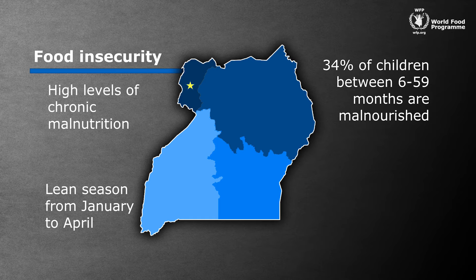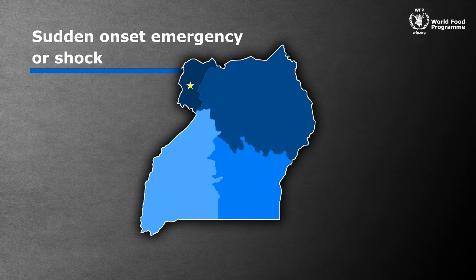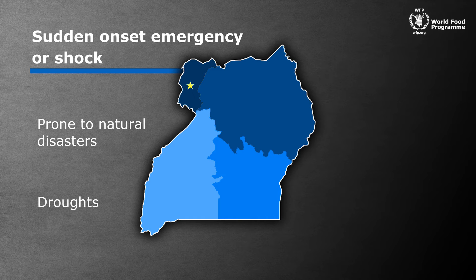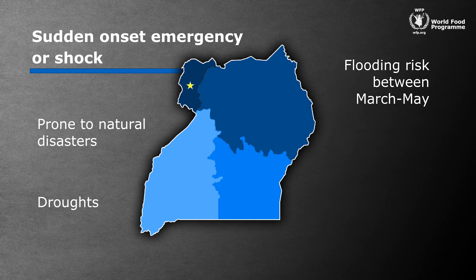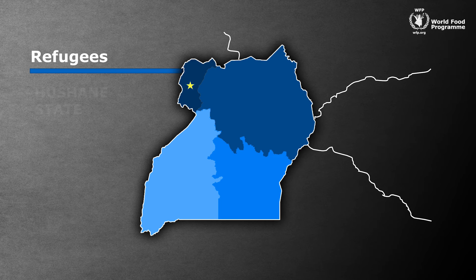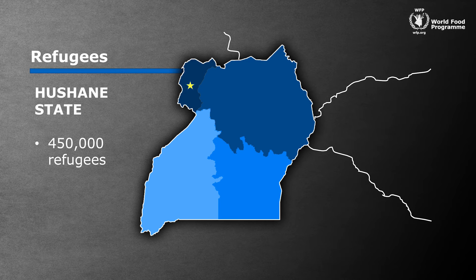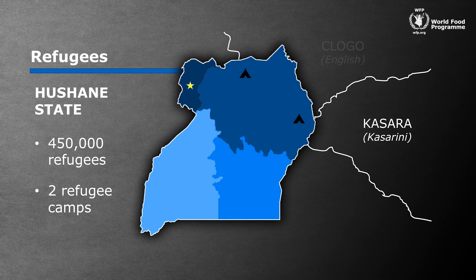One other important factor when conducting remote food security surveys is the potential for a sudden onset emergency or shock. Vamistan is prone to natural disasters — droughts can impact the growing season, and between March and May there is peak flooding risk. Whilst Vamistan has a stable political and security situation, it is vulnerable to emergencies triggered by regional instability. The Hushane Governorate hosts 450,000 refugees, who mostly live in two refugee camps, displaced by ongoing conflict between two of Vamistan's neighbouring countries, Kazara and Klogo.